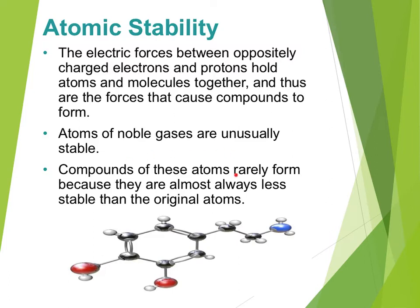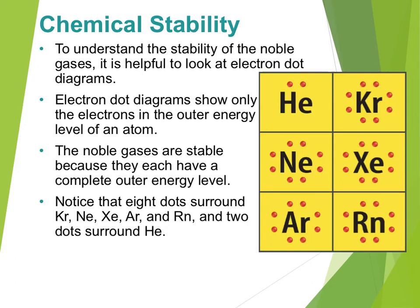We don't really see any compounds from noble gas atoms because those compounds are actually less stable than the original noble gases. One of the things that helps us look at chemical stability is something called an electron dot diagram — that is where you have the symbol of the element, and then you put dots to represent the outermost electrons, or the valence electrons. These outer energy shell electrons are the ones that are involved in bonding. Almost every element on the periodic table wants to have eight electrons in their outer shell. There are a couple of weird ones like hydrogen and helium that only want two because that first shell of electrons can only hold two.